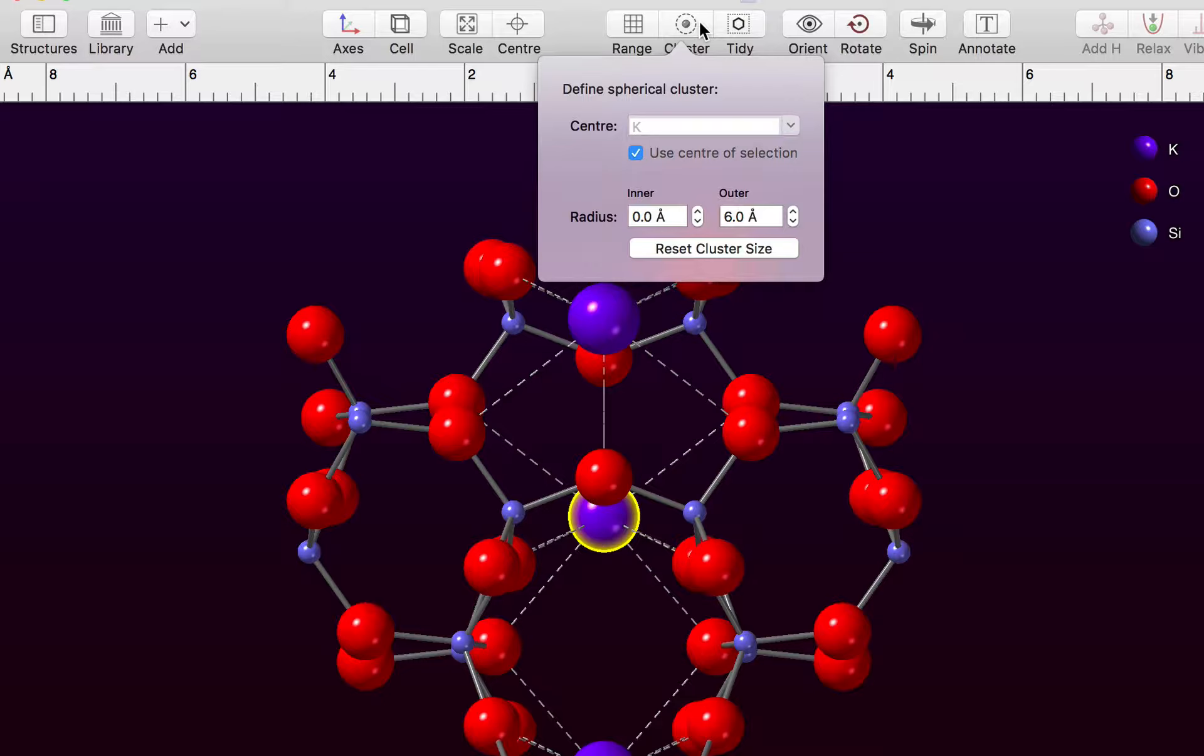We've selected the atom and CrystalMaker has detected the selected atom and enabled the use center of selection checkbox, then it's displaying a default cluster of six angstroms around that atom.